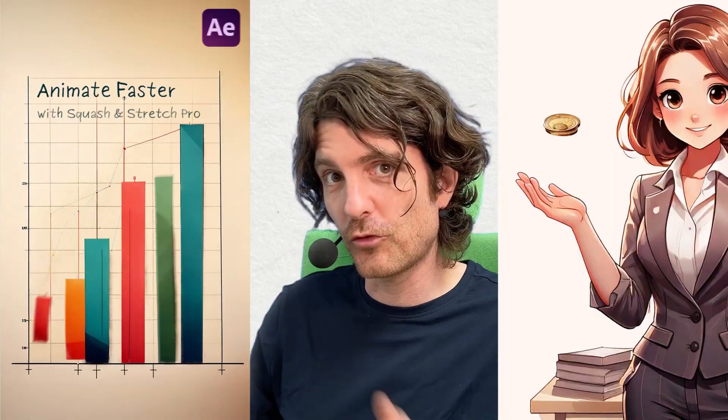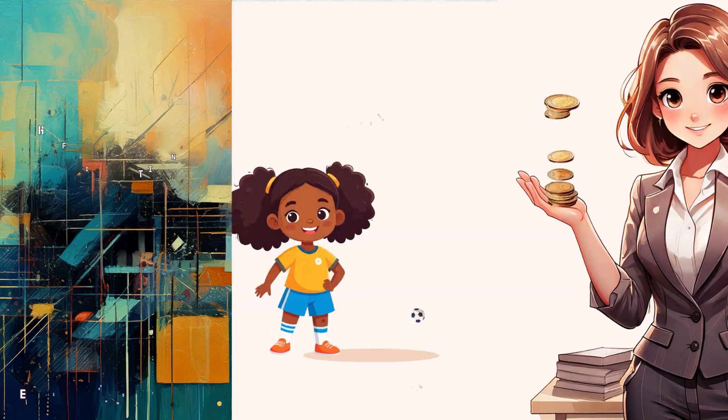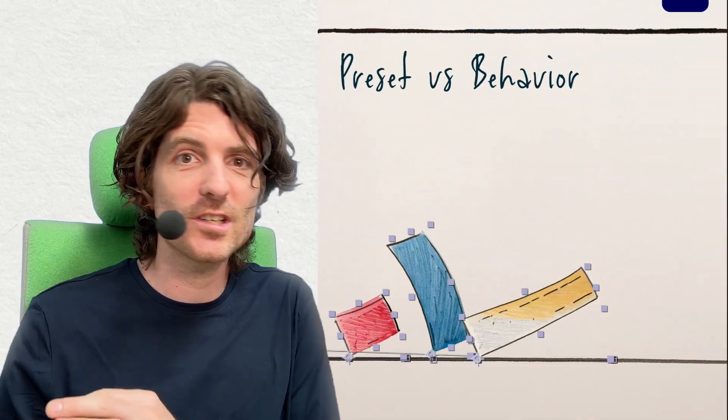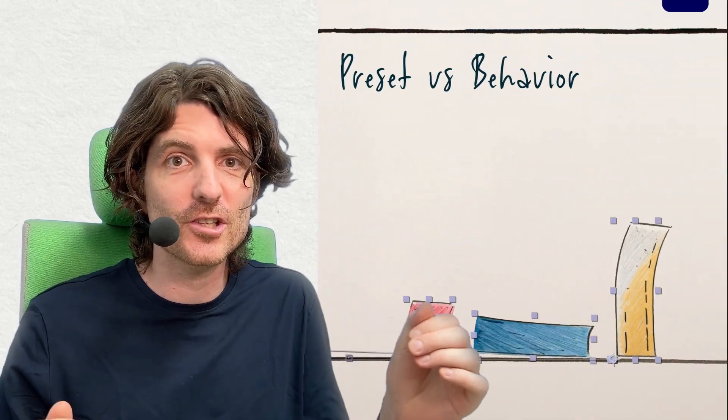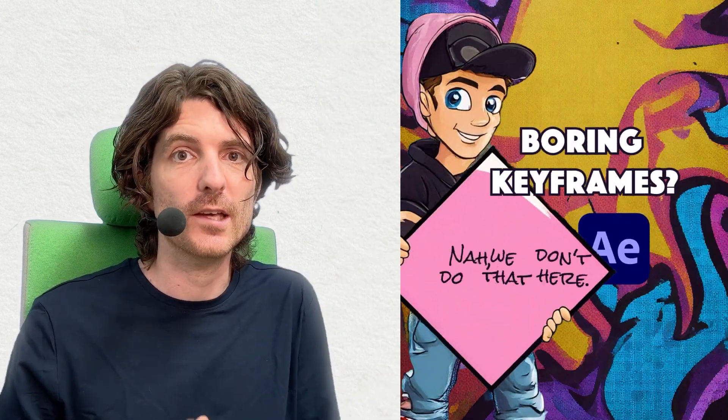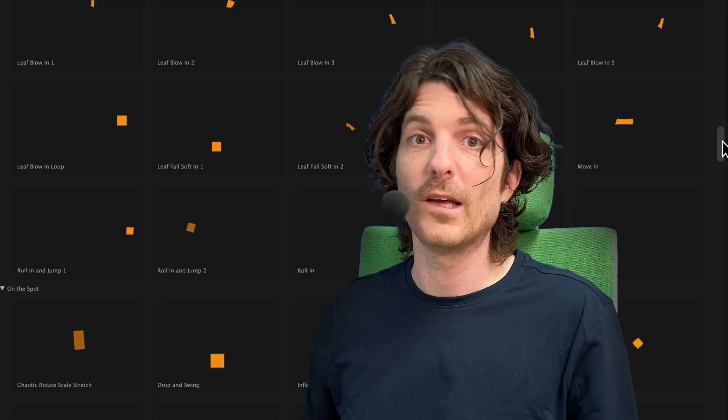I wanted a tool which feels smart but stays simple. Squash and Stretch adapts to your layer's size, position, and aspect ratio, just to make sure it always looks great no matter which layer you apply it to.